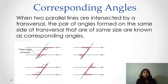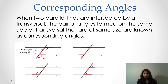Corresponding angles: when two parallel lines are intersected by a transversal, the pair of angles formed on the same side of the transversal and which are of the same size are called corresponding angles. We have to see the position of the angles — they are on the same side. Let's mark this angle as angle 1 and this angle as angle 2.